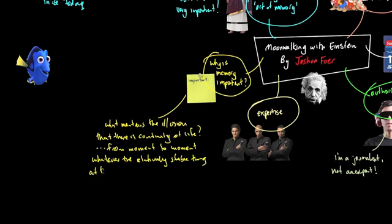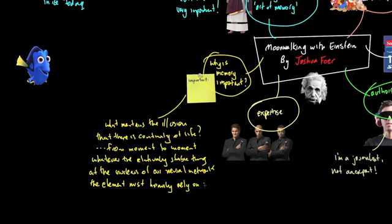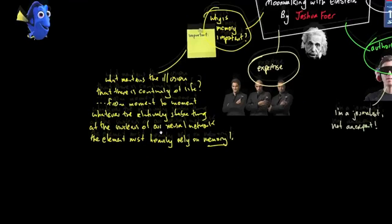Then he suggests that whatever that relatively stable thing at the nucleus of our neural network is, whatever that element is, it must rely very heavily if not entirely on memory. Otherwise, what continuity do we have?